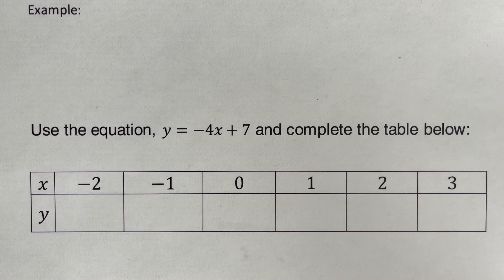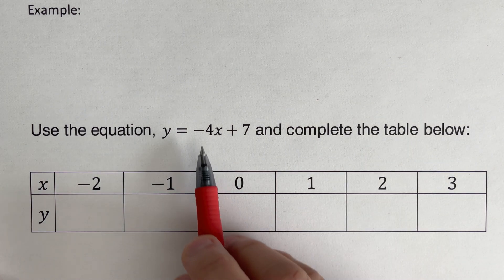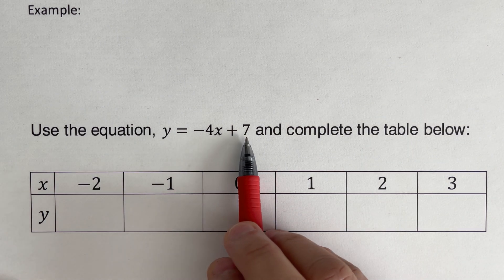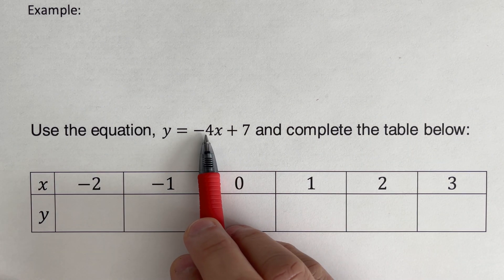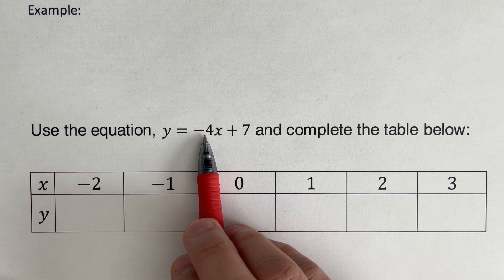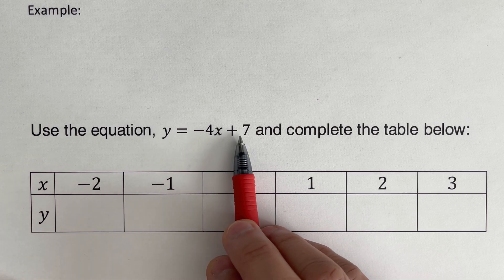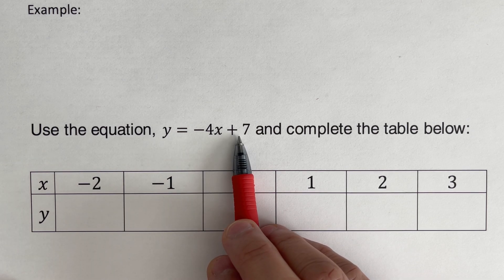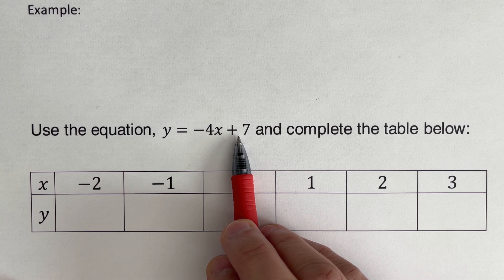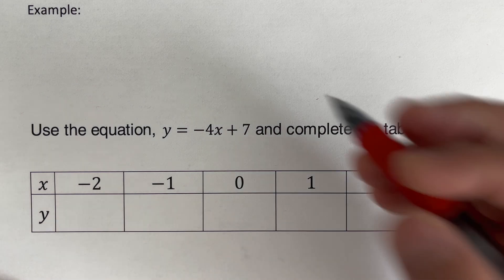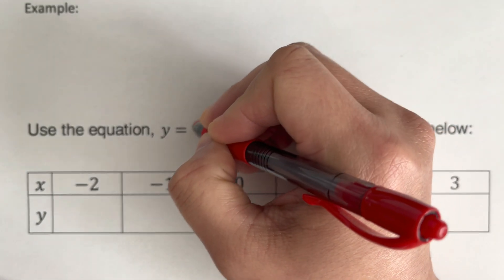For this next problem, we label the two numbers again. The first number is the growth factor or slope, and the second value is the starting or initial value, otherwise called the y-intercept — the value of y when x is 0.